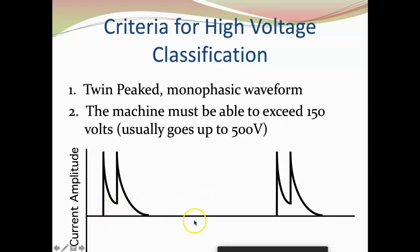What do I mean by monophasic? It's going to stay on one side of the isoelectric line — either the positive side or the negative side. Most often you really don't alternate between the two. So monophasic means it's staying on one side of the isoelectric line. This is a great thing because it allows us to determine the polarity of treatment, and we're going to talk about why that is important when thinking about physiological changes.